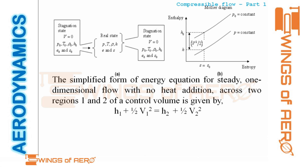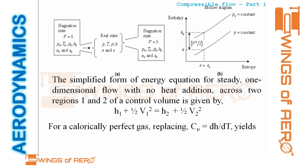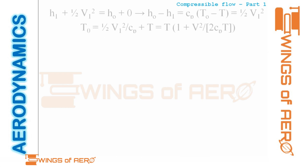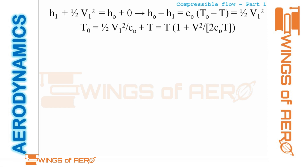Recalling the energy equation: h₁ + ½v₁² = h₂ + ½v₂². For a calorically perfect gas, dh = cp·dT, so we can write: cp·T₁ + ½v₁² = cp·T₂ + ½v₂².